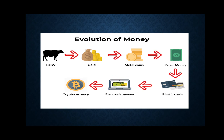Today we have studied about the evolution of money: initially goods were exchanged under barter, then precious metals were exchanged, then came metal coins, after that paper money, then plastic money, and now we have electronic money through internet banking — we can transfer money and make payments through apps. The latest form of money in the economy is cryptocurrency.